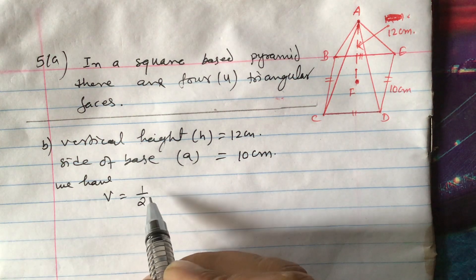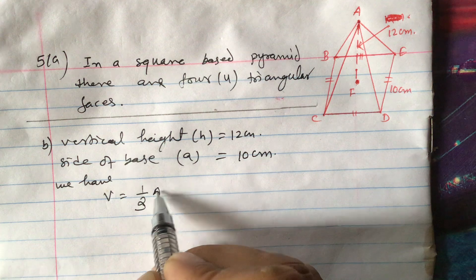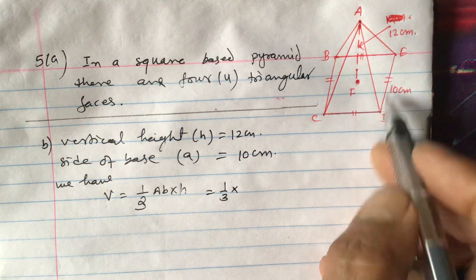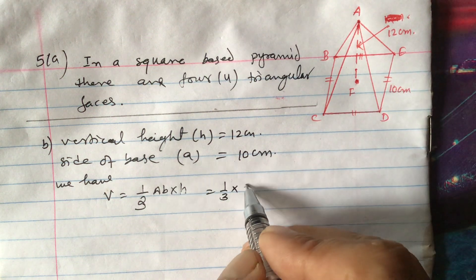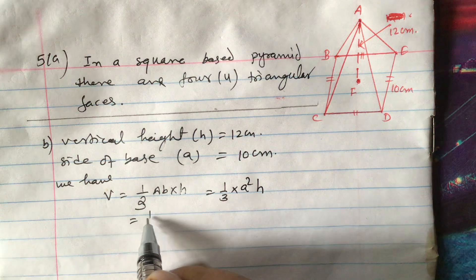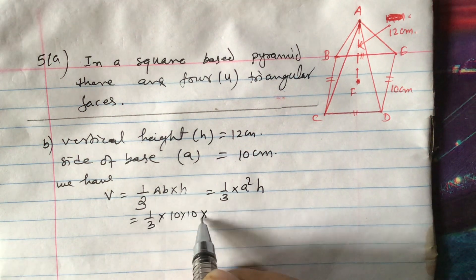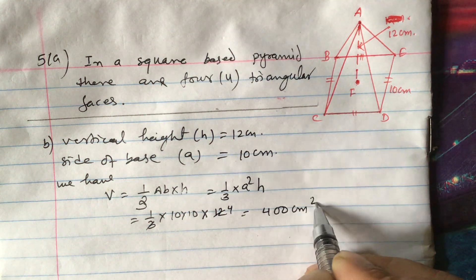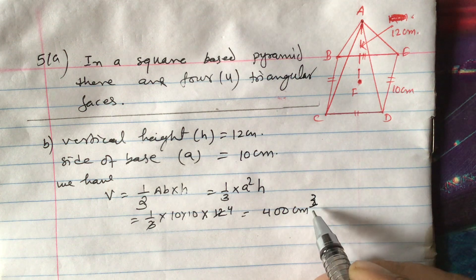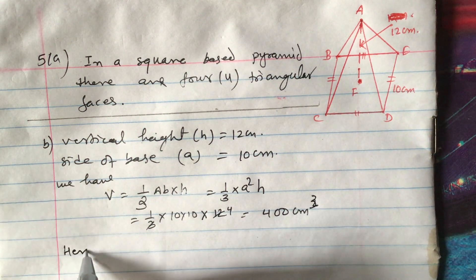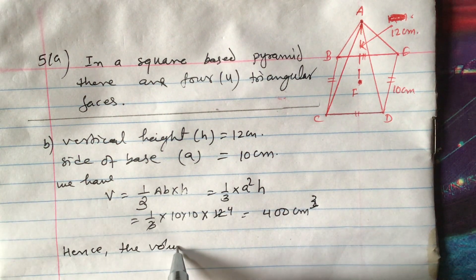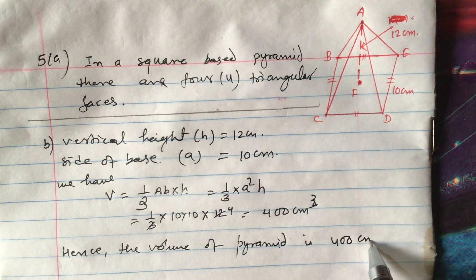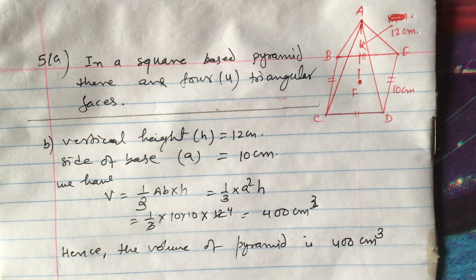We apply the formula: V equals one-third times area of base times height. Since the base is a square, the area of the base is a times a, which is a squared. So V equals one-third times 10 times 10 times 12. We can cancel: 12 divided by 3 gives 4, so V equals 400 cm³. Hence the volume of the pyramid is 400 cm³.